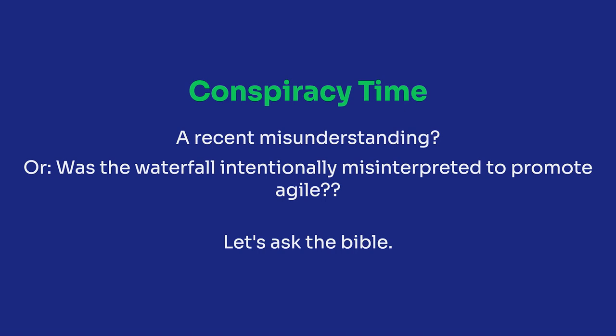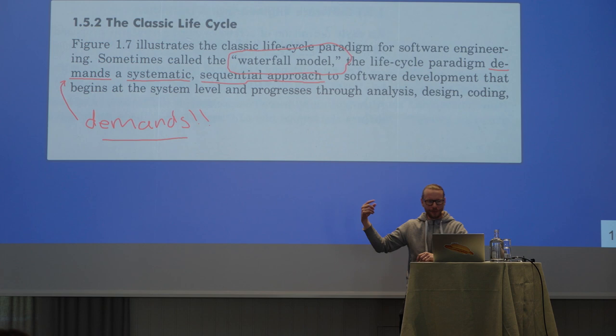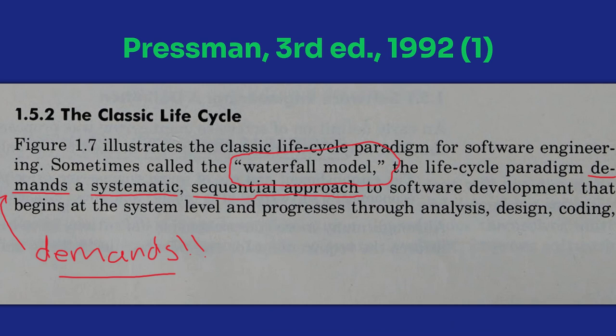So how did this happen? Is it a recent misunderstanding? Sometimes it feels like people might be trying to sell us Agile and they're talking about these old ways of doing things - like companies used to do Waterfall and now there is this new thing called Agile. So let's ask the Bible, which is this one. It's used at universities all around the world for, you know, lying about software engineering. We went back in time a little bit - this is the third edition from 1992. And it presents the Waterfall model, and as we can see, it demands a sequential approach. So you can't go back.